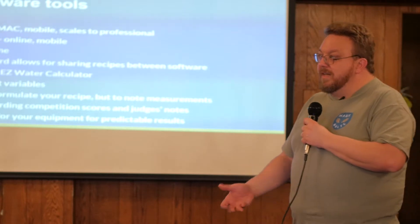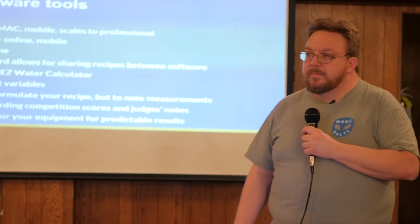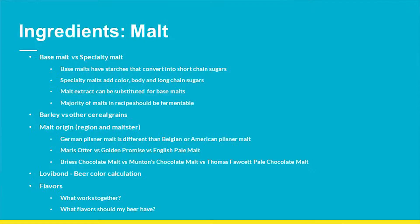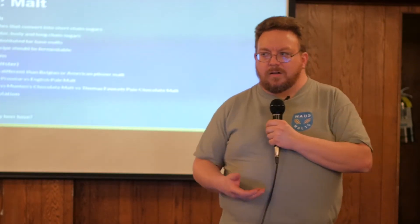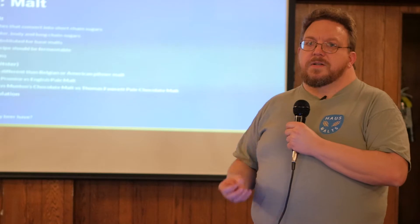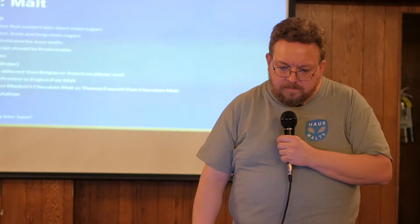For the less experienced brewer, when thinking about malt there are really two major types: base malts, which make sugars that yeast can eat to make alcohol, and specialty malts, which add colors and flavors that base malts can't do. That's the big distinction.